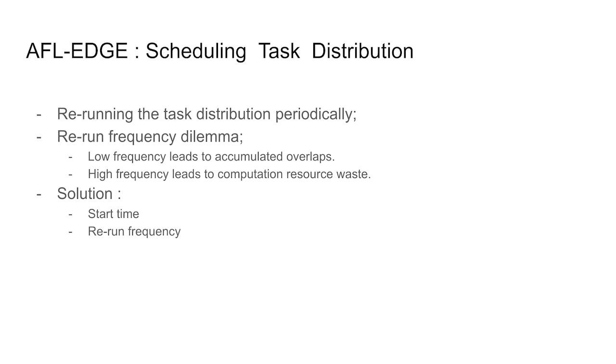Our design needs to periodically rerun the task distribution. However, a low frequency of redistribution may not timely avoid accumulated overlaps, while a too high frequency can lead to waste of resources. In our design, we adjust the scheduling of task distribution based on the increase of edge coverage. We start the first round of distribution after the first hour, and we rerun it once the new edge coverage growth reaches 10%.